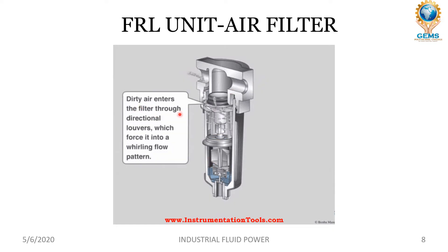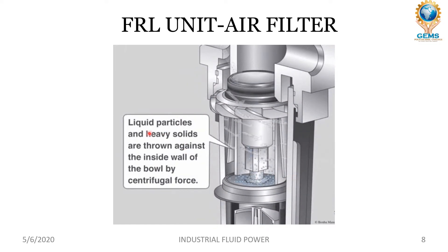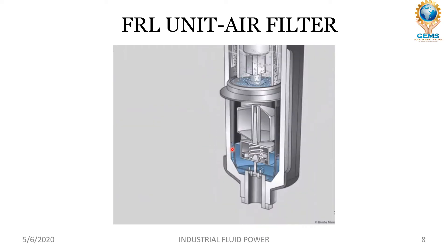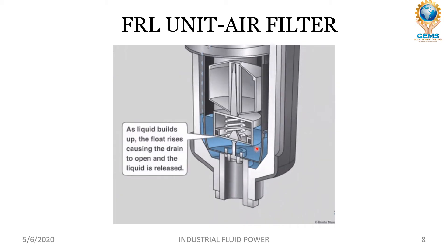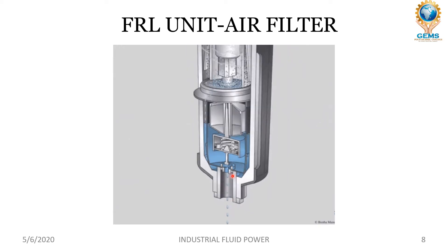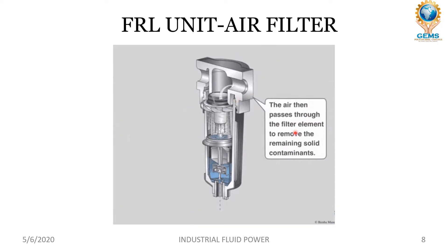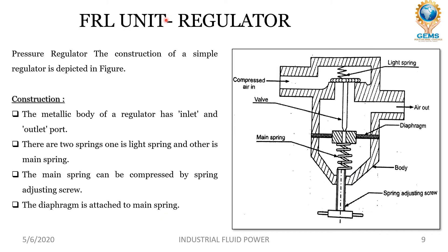Dirty air enters into the filter through directional loads which force air into the filter, so liquid particles and heavy solids are thrown out and collected at the bottom of the bowl. They are removed by the automatic drain assembly: as liquid builds up, the float rises causing the drain to open and the liquid is released. Finally, the air passes through the filter element to remove the remaining solid contaminants.